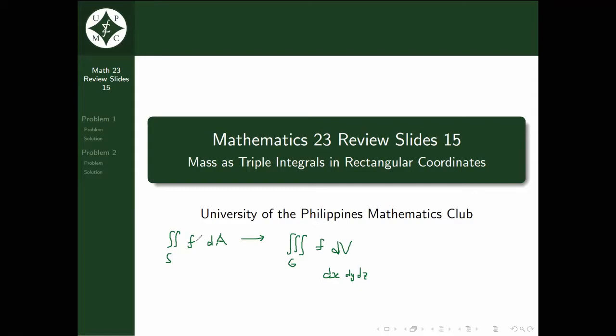To perform a triple integral, it's similar to a double integral. You set the boundaries, except this time there are 3 sets of boundaries, and then you do the integral. In double integrals you do 2 integrals, in this one you do 3. Let's do a few problems.